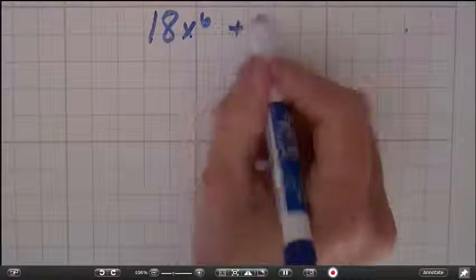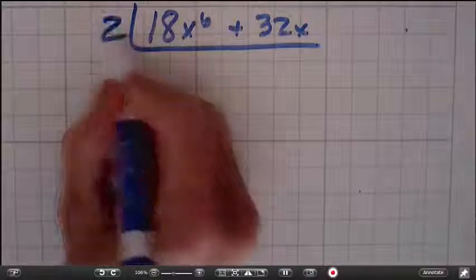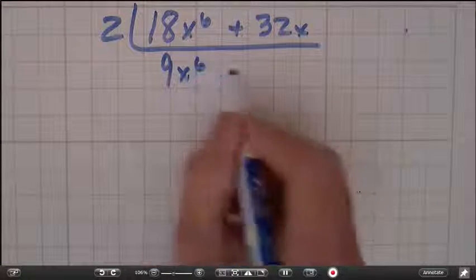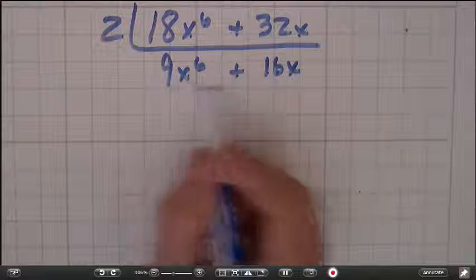Last question. 18x to the 6th plus 32x. Now, I'm going to take a 2 out. And I know that's 9x to the 6th plus 16x. Is there anything I can take out of 9 and 16?